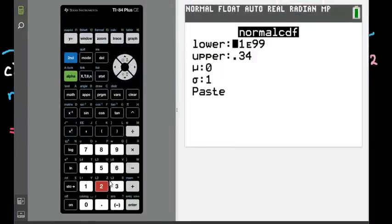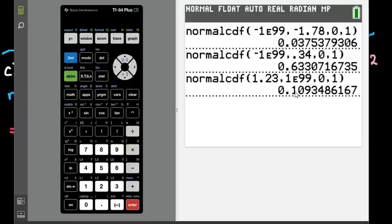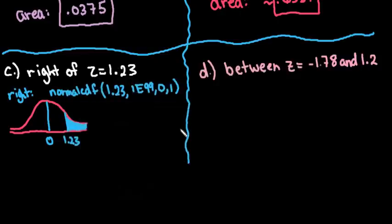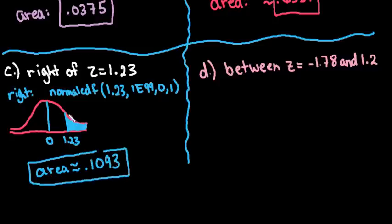So grab my calculator, second distributions and we're going to choose option 2 normal CDF. This time for my lower I'm going to type in the 1.23, my upper is 1 and I'm going to hit the second comma button 99, and then I'm going to leave it as 0 and 1. Make sure you put in positive infinity and not negative infinity. If you put in a negative infinity here it will give you a negative area which doesn't make sense. So if you hit enter we see that it's 0.1093 approximately. So our area is approximately 0.1093, so approximately 10.93% of the area falls to the right of Z equals 1.23.